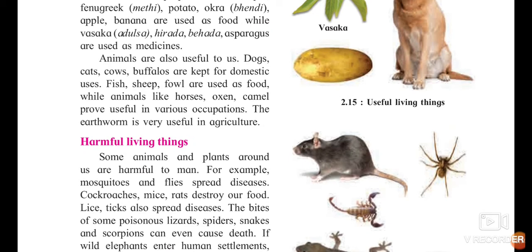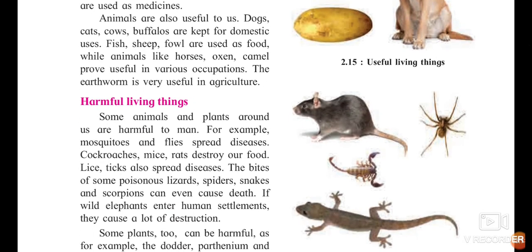Now, which are the harmful living things? You can see in the pictures — scorpion, rat, lizard, spider, etc. They are of no use to us and can only spread disease. Some animals and plants found nearby are harmful. For example, mosquitoes and flies spread diseases. Cockroaches, mice, and rats destroy our food and whatever is present in our house.